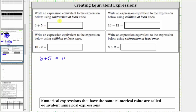But we're asked to use subtraction at least once, which means we need to find a difference equal to 11. For example, 12 minus one is equal to 11, and therefore 12 minus one is equivalent to the expression six plus five. Also, 13 minus two is equal to 11, and therefore 13 minus two is also equivalent to the expression six plus five.